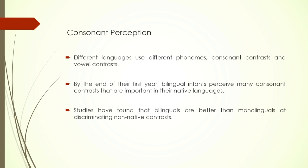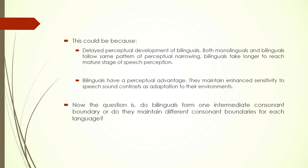There have also been studies on consonant perception. Different languages use different phonemes, consonant contrasts, and vowel contrasts. By the end of the first year, bilingual infants typically perceive many consonant contrasts that are important in their native language — for example, in Indian languages we have a four-way difference in terms of voicing and aspiration among stops. Studies have found that bilinguals are better than monolinguals at discriminating non-native contrasts. By age 1 they already know how to contrast sounds in their native language and can also do the same for non-native languages.